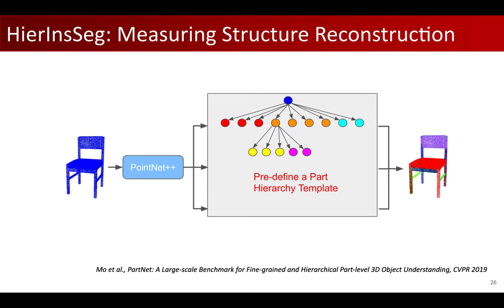In addition, we propose a novel metric, HierInsSeg, that performs hierarchical part instance segmentation. Given a holistic shape point cloud as input, we reconstruct a part hierarchy describing the shape parts and structure as output. Notice that this is exactly the inverse procedure of our PT2PC task. This metric can help us evaluate how well the generated point cloud shapes match the input symbolic part-tree condition.